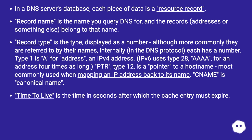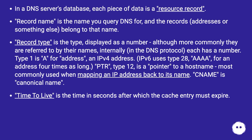Record type is the type displayed as a number, although more commonly they are referred to by their names. Internally, in the DNS protocol, each has a number. Type 1 is A for address — an IPv4 address. IPv6 uses type 28 for an address four times as long. PTR type 12 is a pointer to a host name, most commonly used when mapping an IP address back to its name.